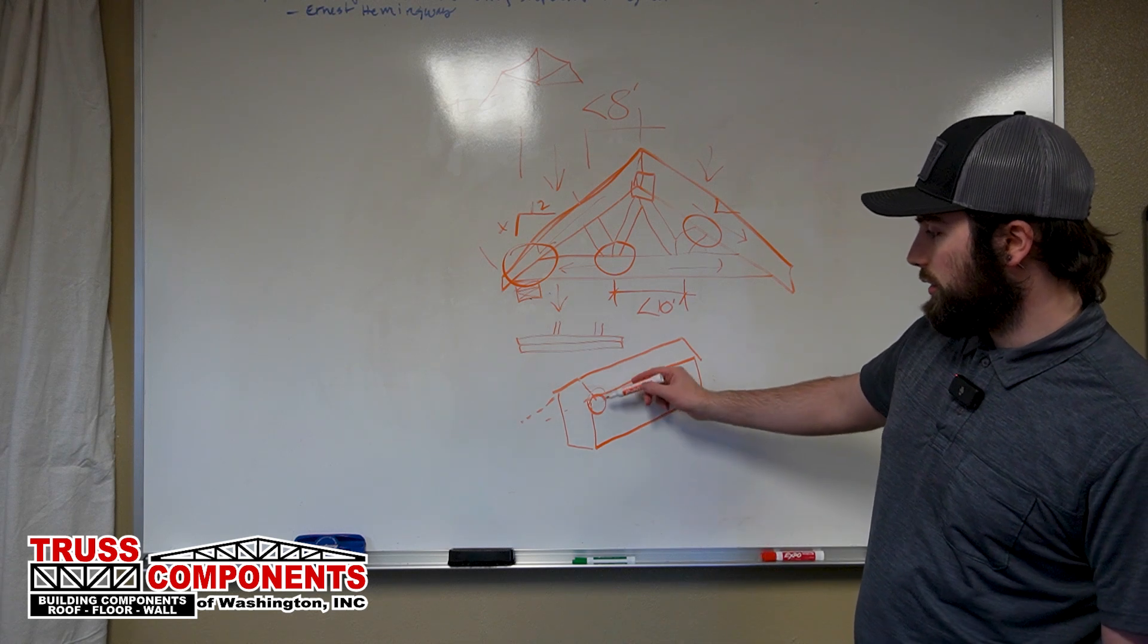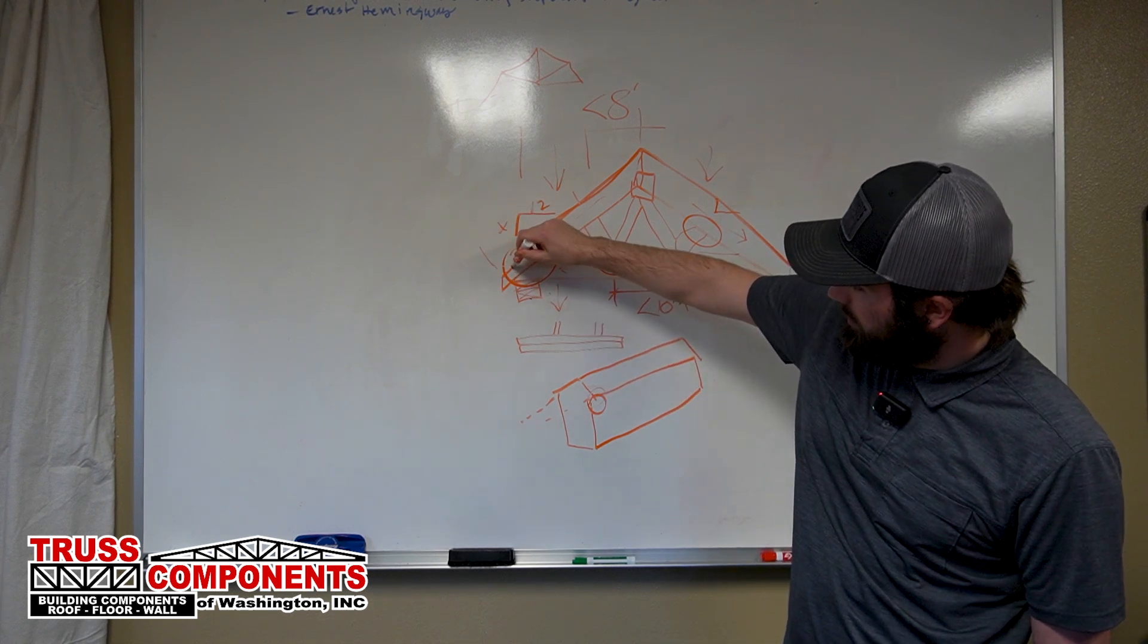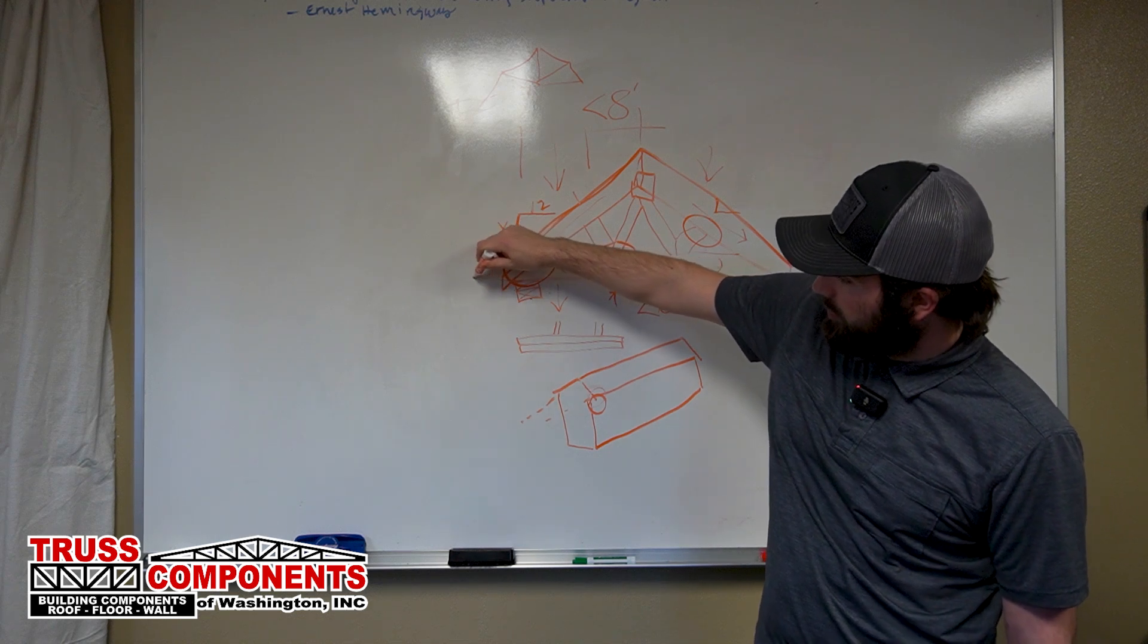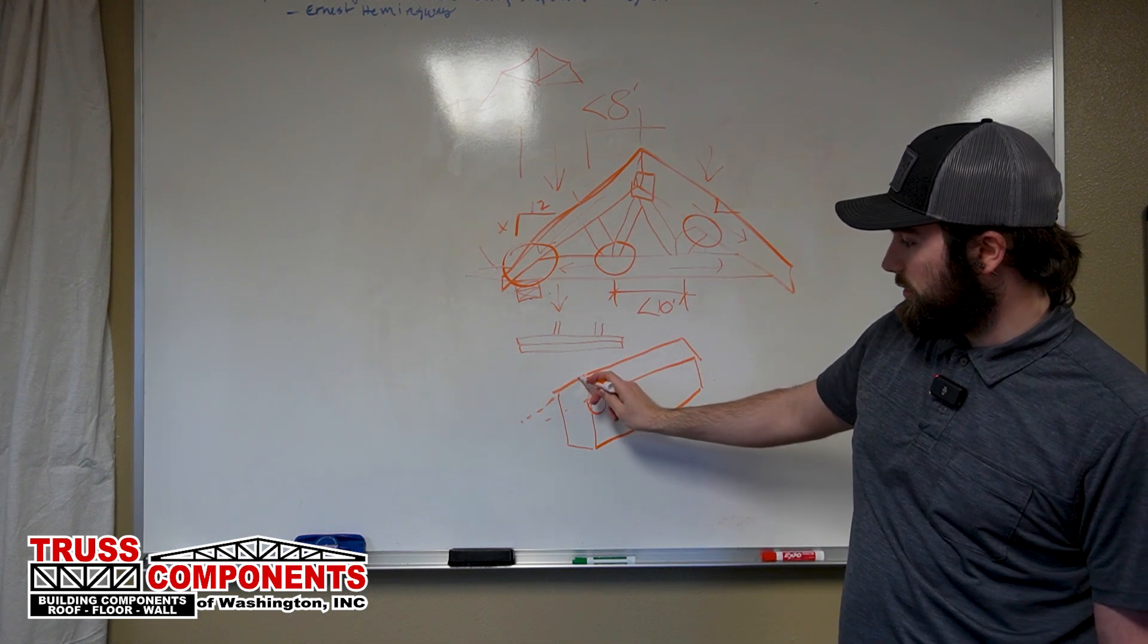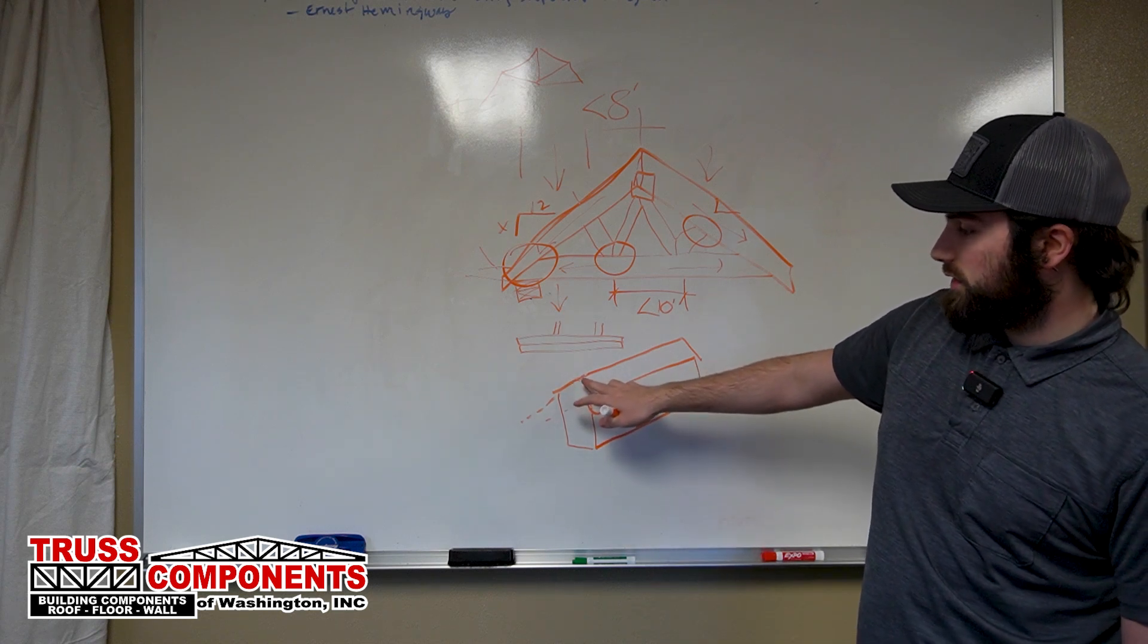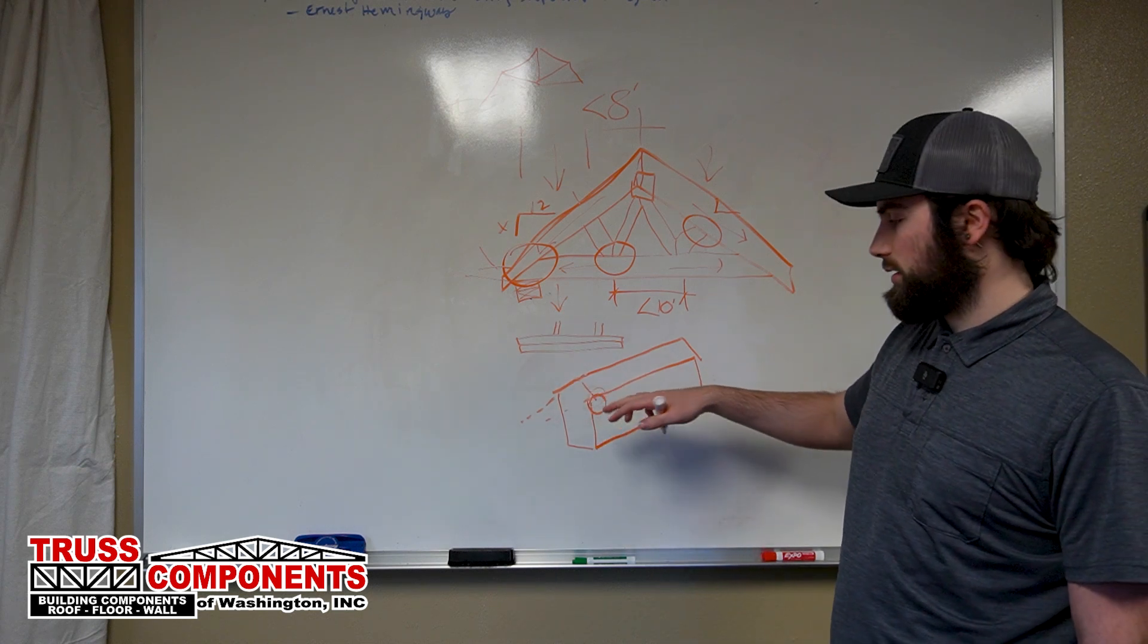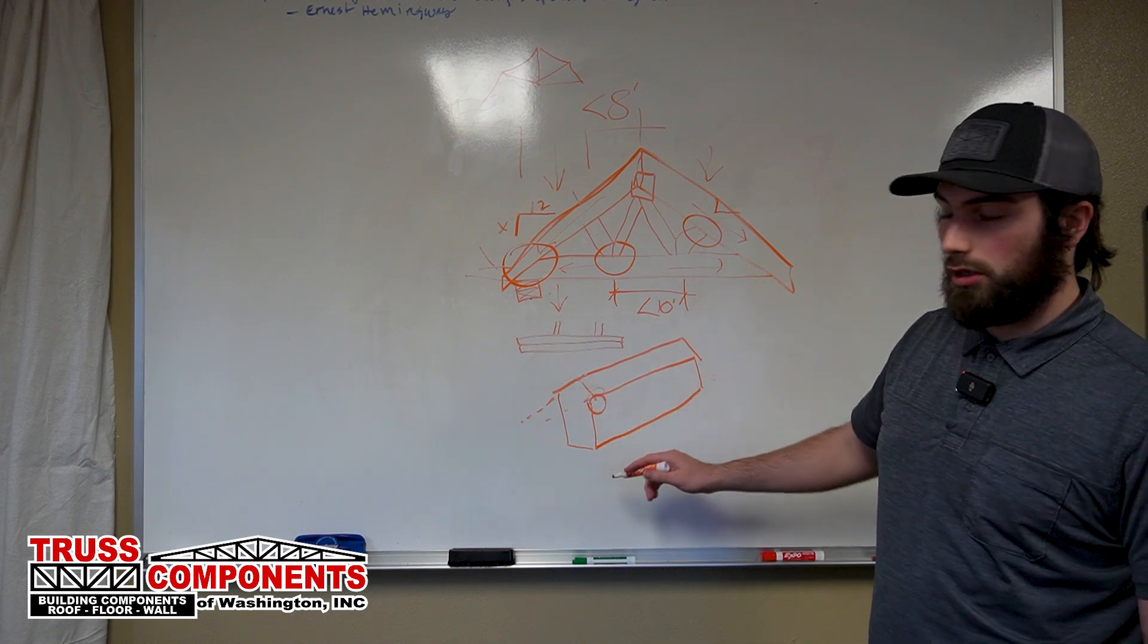So if we were to get that heel height incorrect, then our ridge would not line up with the existing. We would be either too high or too low. And again, if our pitch was incorrect but our heel was correct, our ridge would either be too high or too low.